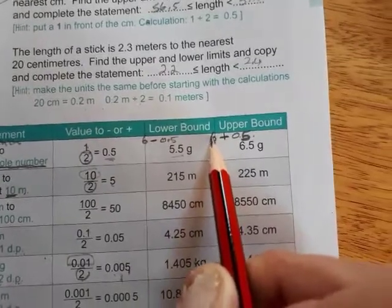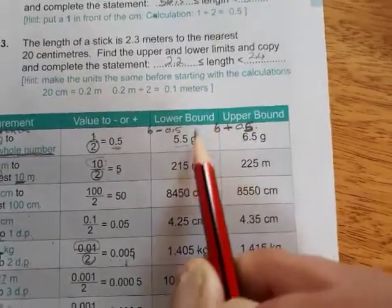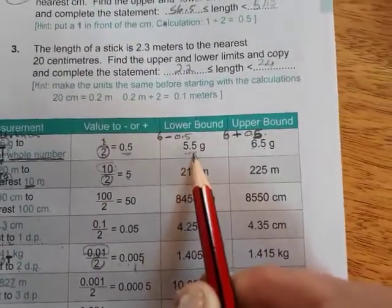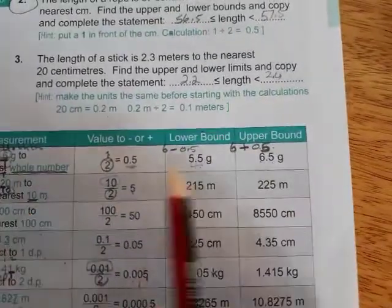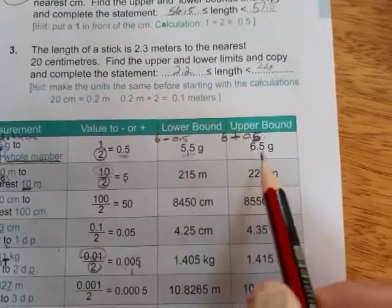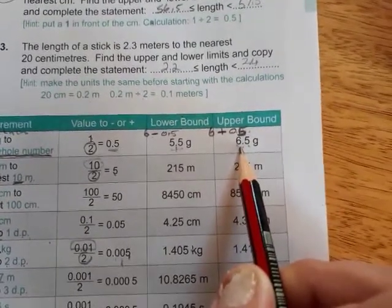Here, you will have 6 plus 0.5, which gives you 6.5. So your lower bound, your lowest possible number that can be rounded to 6, is actually 5.5. And then your upper bound is 6.5. But remember, this is just less than 6.5.